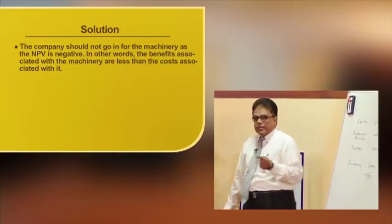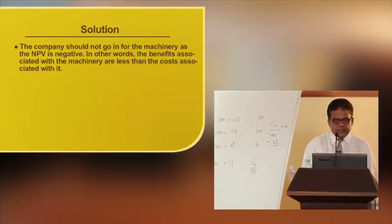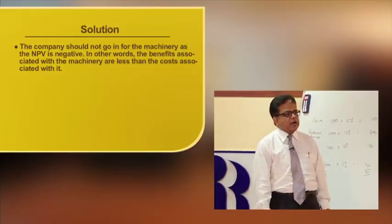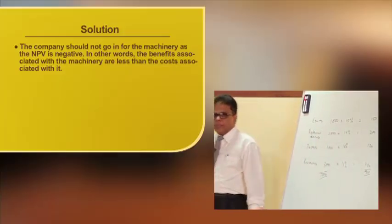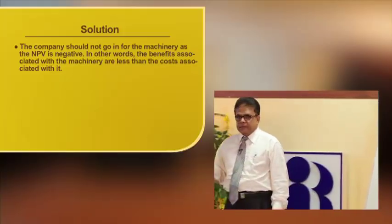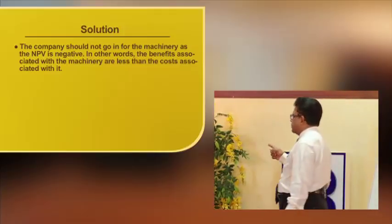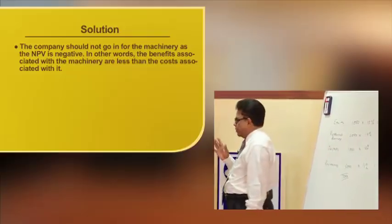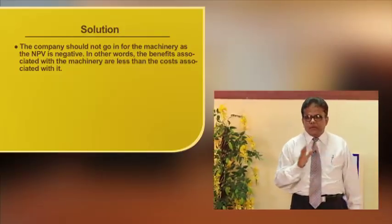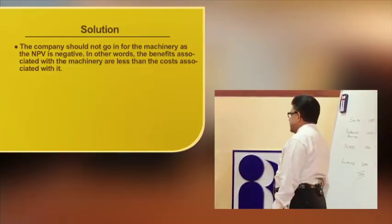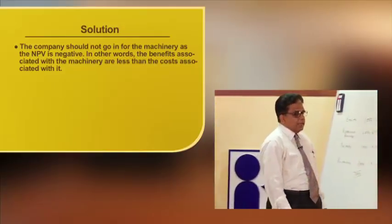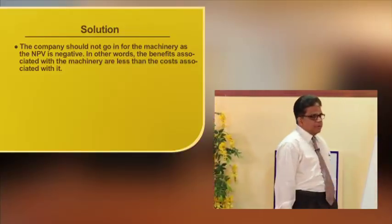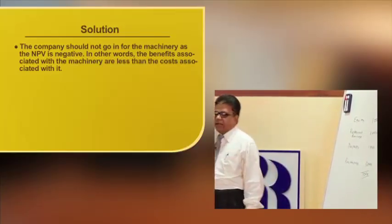The NPV is negative. The ultimate inference is that the company should not go in for this machinery as the NPV is negative. In other words, the benefits associated with the machinery are less than the costs. If the NPV is negative to the extent of minus 6,841, it will be better for the company not to invest in this project. The cardinal principle is: if NPV is positive, accept the project; if NPV is negative, reject it.